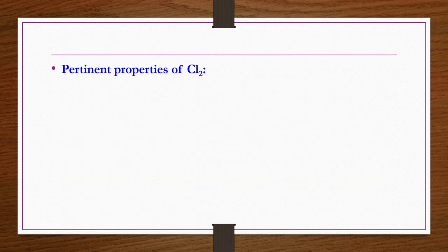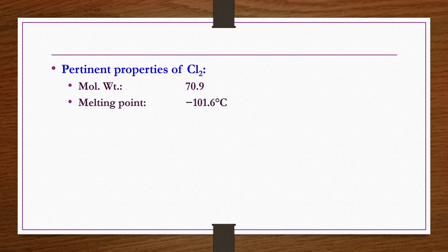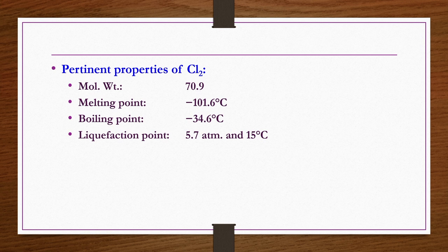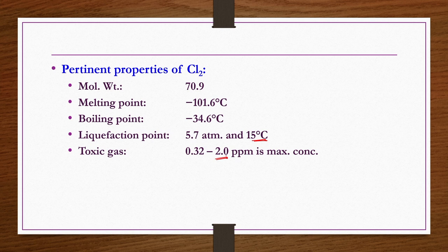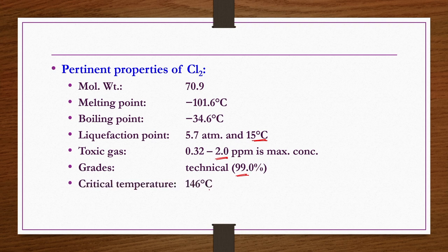Pertinent properties of chlorine: molecular weight is 70.9, melting point is minus 101.6 degrees centigrade, boiling point is minus 34.6 degrees centigrade, liquefaction point is at 15 degrees centigrade and 5.7 atmospheres. It is a very toxic gas, not allowed to have more than 2 ppm maximum concentration. Technical grades available are 99 percent purity. Critical temperature is 146 degrees centigrade and critical pressure is 93.5 atmospheres.